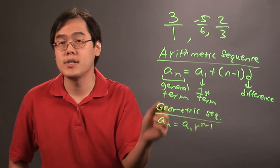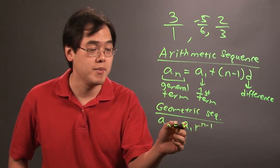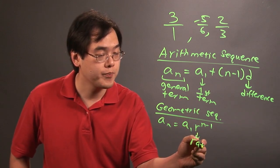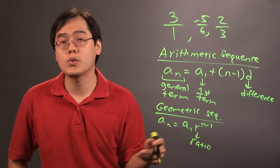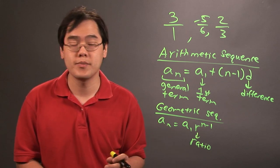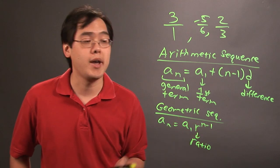Now, a_n is the same as this a_n, the general term, has the same meaning. a_1 is also known as the first term. r is the geometric ratio. In other words, what number has to be multiplied or divided between the terms? And then you have n minus 1.